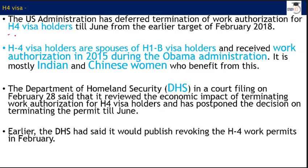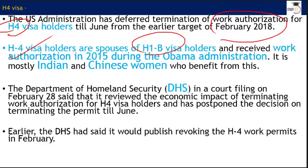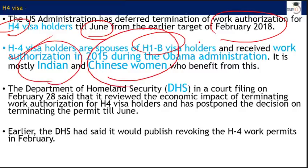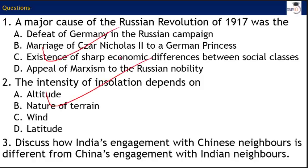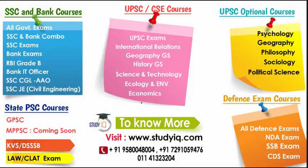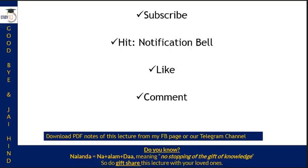The H4 visa is given to spouses of H1B visa holders. Under the Obama administration, H4 visa holders were allowed to work in the USA. The Trump administration had set February 28 as the deadline to end this, but they have now decided to extend it until June, giving breathing space predominantly to Indian and Chinese women who accompany their spouses on H1B visas. Three questions — two MCQs and one descriptive — are available for you to go through. Enjoy your Sunday and share your observations in the comments.